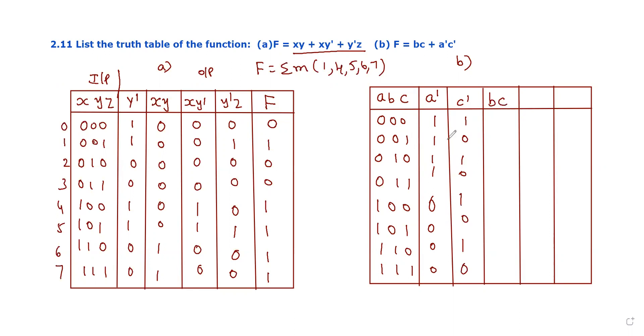Next, for the first term bc, we apply the AND operation to bc: 0, 0, 0, 1, 0, 0, 0, 1. Next, a'c' with AND: 1, 0, 1, 0, 0, 0, 0, 0.